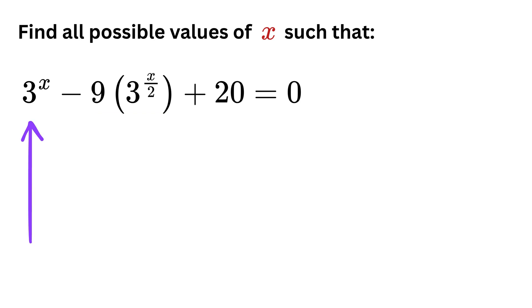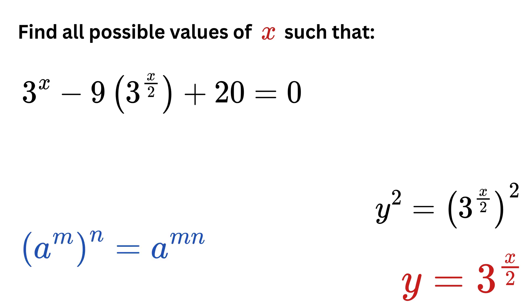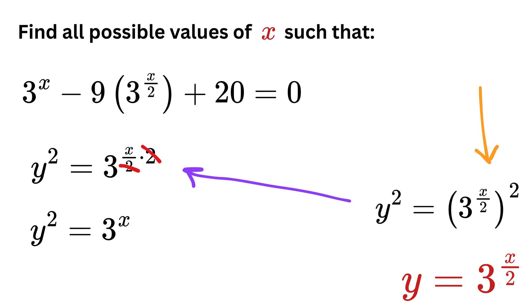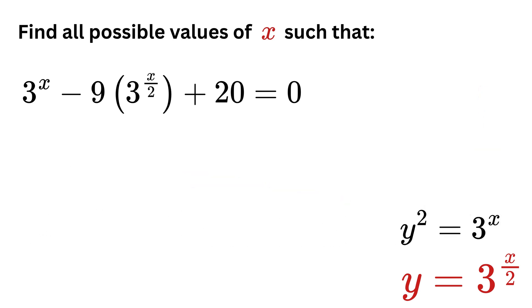Now look here: we have 3 raised to x and here we have 3 raised to x over 2. Since we have everything in the same base now, we can look for a clever substitution to turn the problem into something we already know how to solve. Thus let y equals 3 raised to x divided by 2. Then if you square both sides, the left side becomes y squared and the right side becomes 3 raised to x divided by 2 squared. If we apply this power rule again, we get 3 raised to x divided by 2 times 2, which simplifies to 3 raised to x.